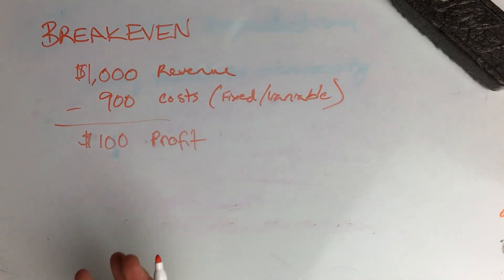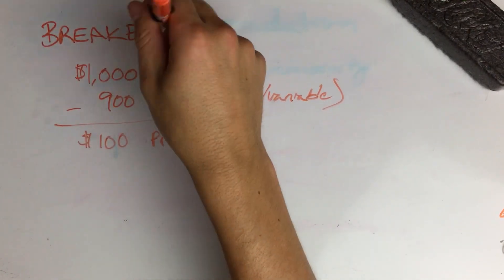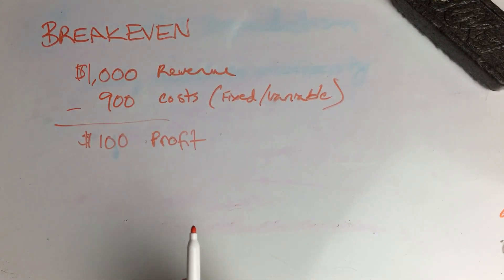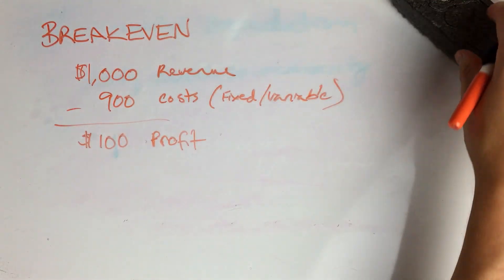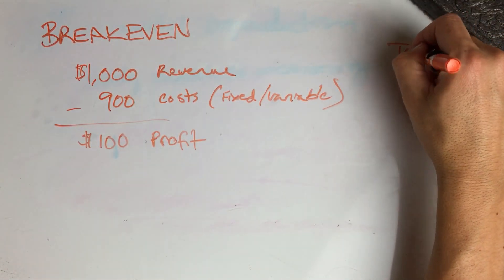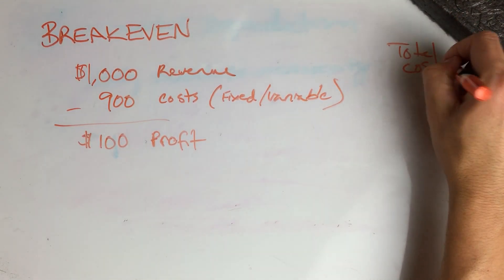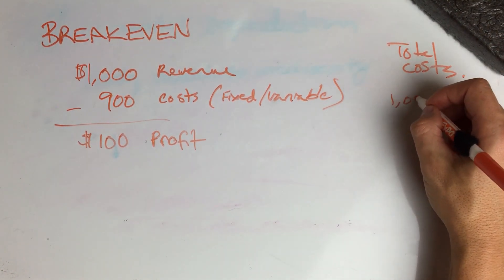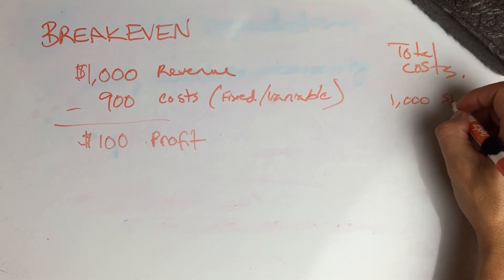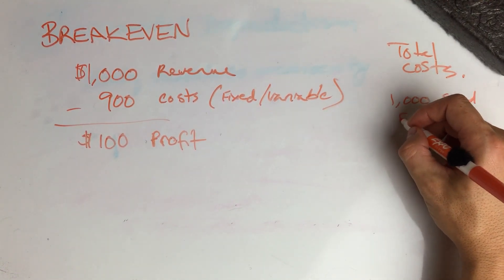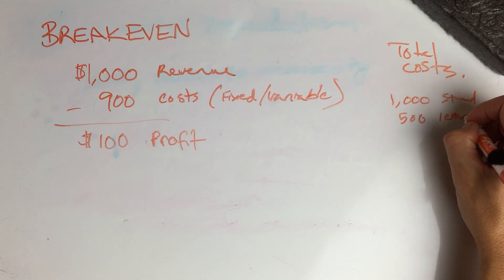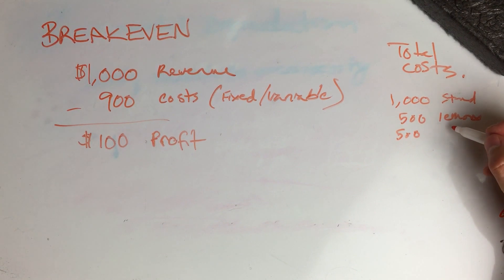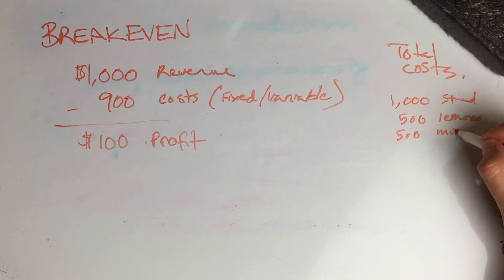Now, are you breaking even? The question is, how much did you spend to get to this point? You can't answer that break-even question without knowing your total costs to date. And by that I mean, let's total it up. Let's say you spent $1,000 getting your stand, $500 on lemons, and $500 on ice, water, miscellaneous, whatever else you did.